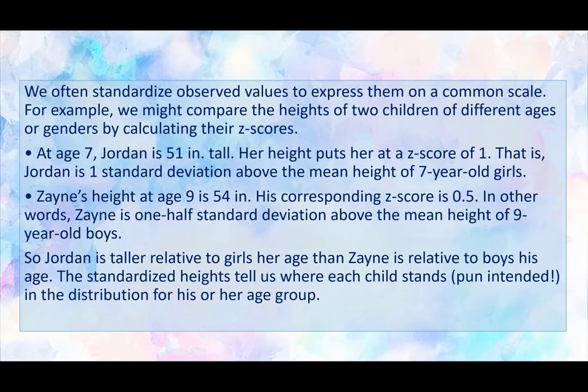Now Zane's height at 9 is 54 inches. His corresponding z-score is 0.5. In other words, Zane is one half standard deviation above the mean height of 9-year-old boys. So while Zane is taller than other boys his age, Jordan is taller relative to girls her age than Zane is relative to boys his age. So in general, Jordan is taller compared to kids that are in the same age group and gender. The standardized heights tell us where each child stands, pun intended, in the distribution of his or her age group. So by standardizing things, we can actually see how they measure up, again another pun intended, to their peers.